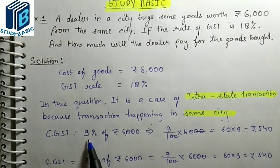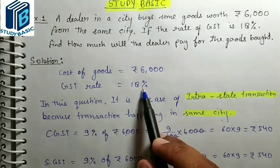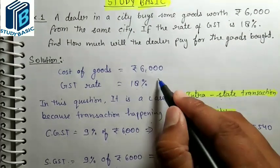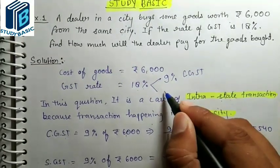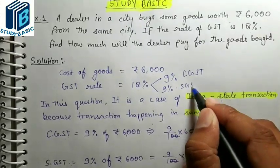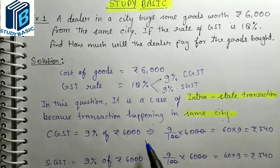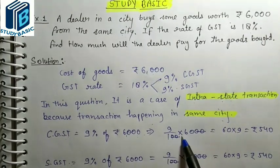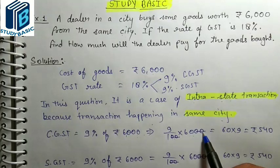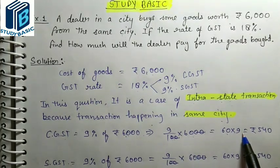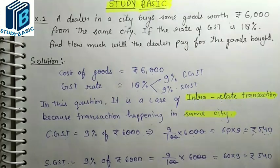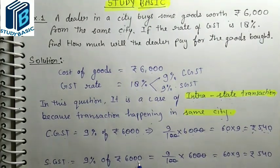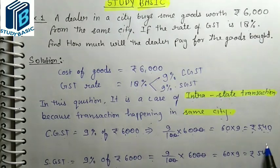For an intra-state transaction, since 18% GST applies, it is split equally: 9% will be CGST and 9% will be SGST. Now, 9% of 6000 — that is 9 by 100 multiplied by 6000 — the zeros cancel, and 60 multiplied by 9 gives 540. So CGST = 540 and SGST = 540.